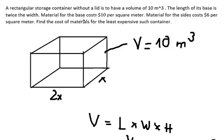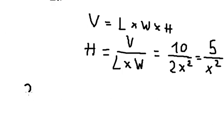Now the next one, we have material for the base that is about $10 per square meter. So the area of this one should be about 2x multiplied by x, and we have 2x squared. However, we need to find the function related to the total cost.